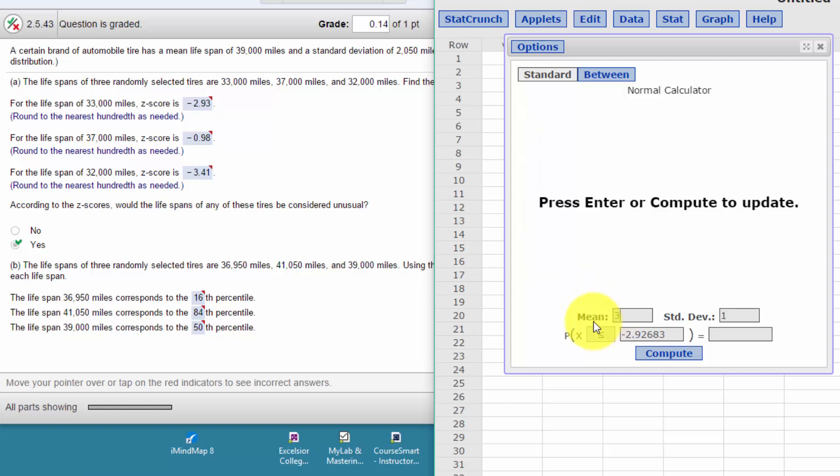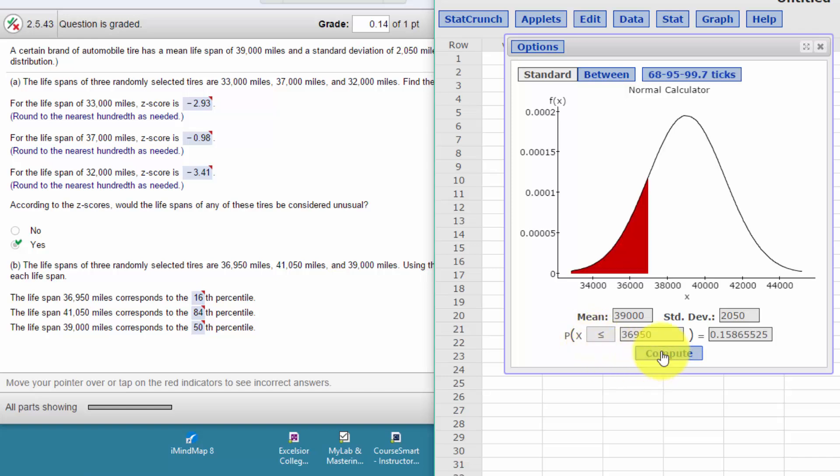To do this, I'm going to go back and put in our population mean of 39,000, our population standard deviation of 2,050, and I'm going to put in the x value: 36,950. I'm going to click on Compute.